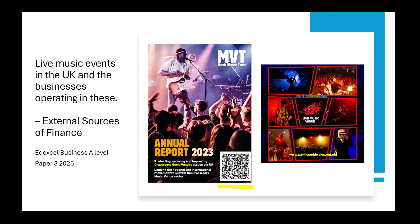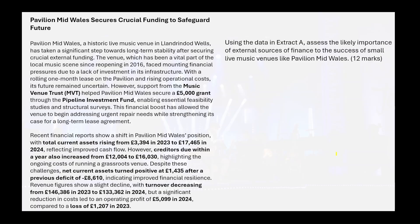When I looked at this, I thought external sources of finance, then downloaded their accounts from Companies House. So we can actually practise a nice 12 marker. Here's the 12 marker for you. I've emboldened some of the key bits of information in here, but there are other things in there as well.